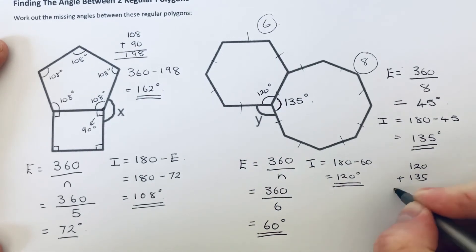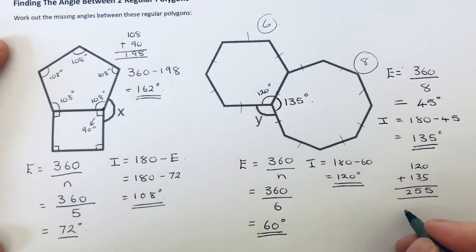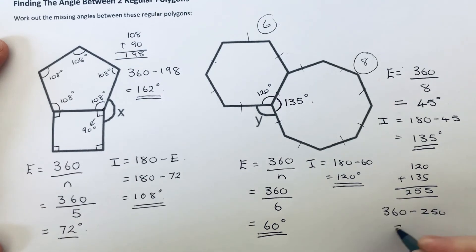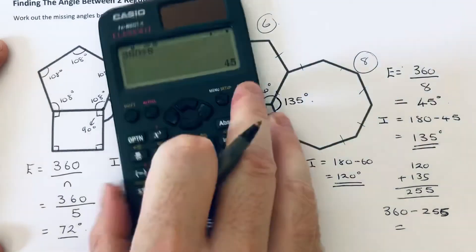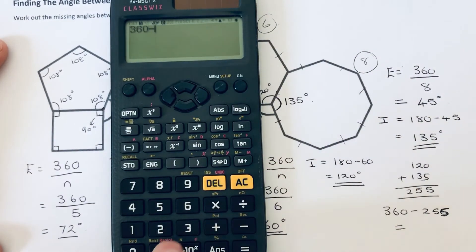So 120 and 135 is 255. So take this away from 360.